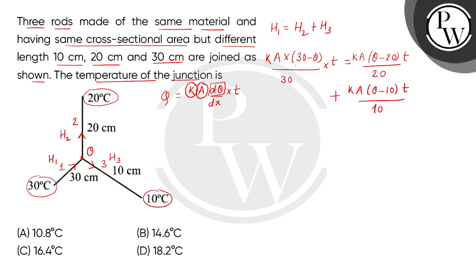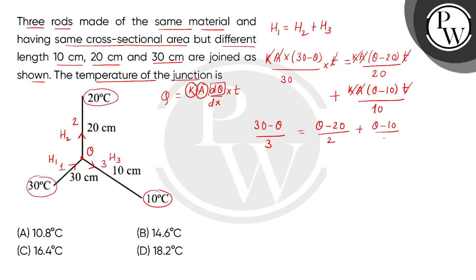अब दोनों तरफ से K, A, और T cancel हो जाएगा। 10 से cancellation करने पर हमें मिलता है: (30 − θ)/3 = (θ − 20)/2 + (θ − 10)/1.